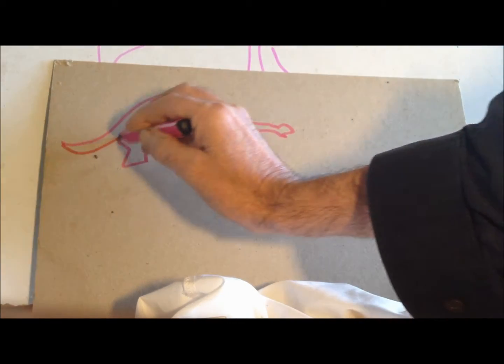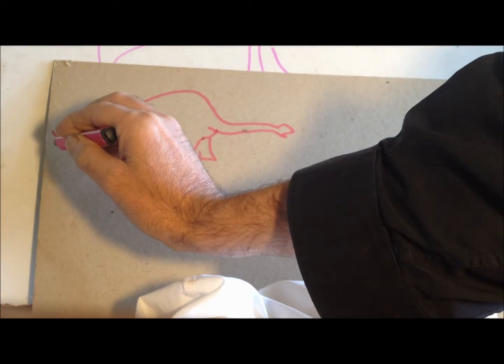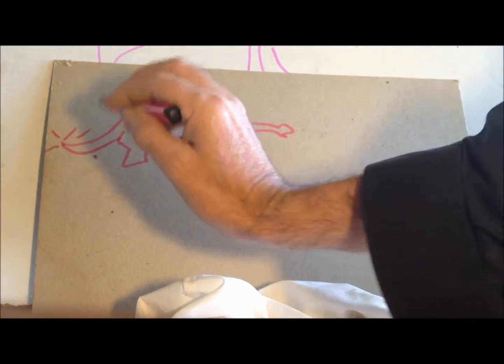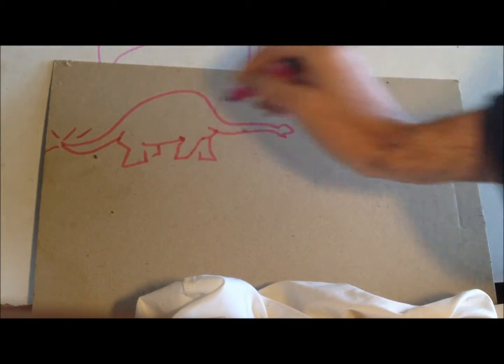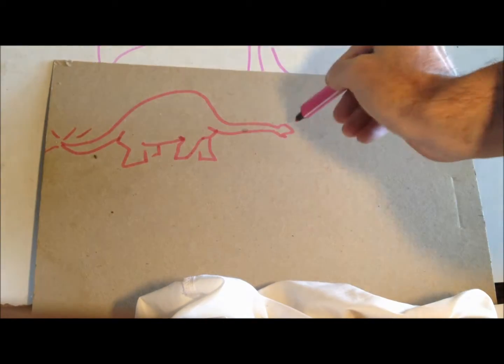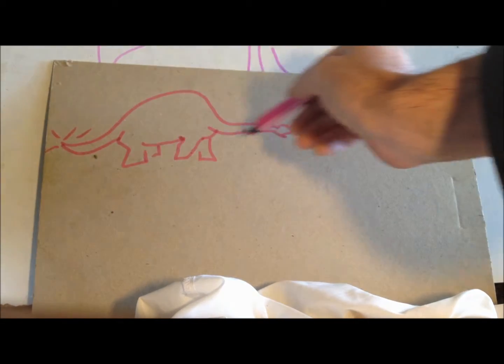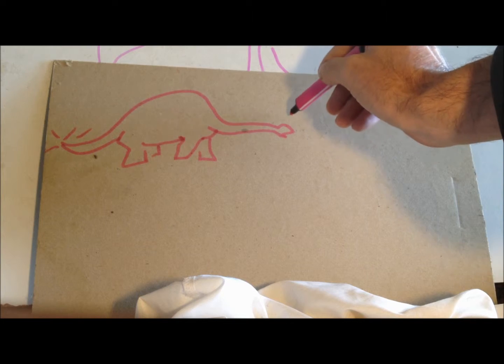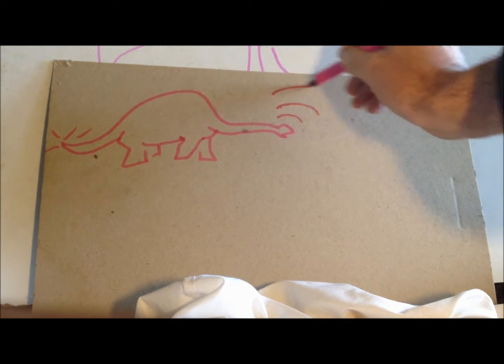Apparently some dinosaurs had another brain in their tail. Because this brain was so far away from the tail that it couldn't actually get any signal down there. Which means that this brain wasn't all that big either.